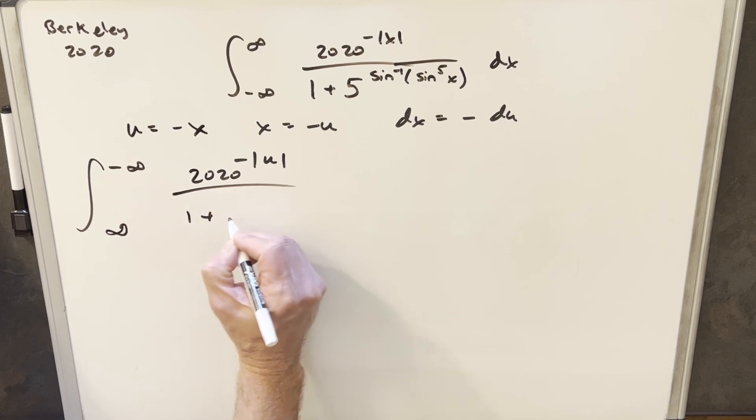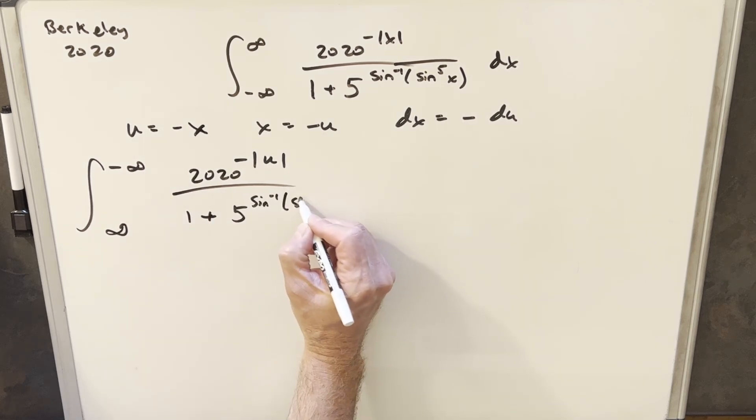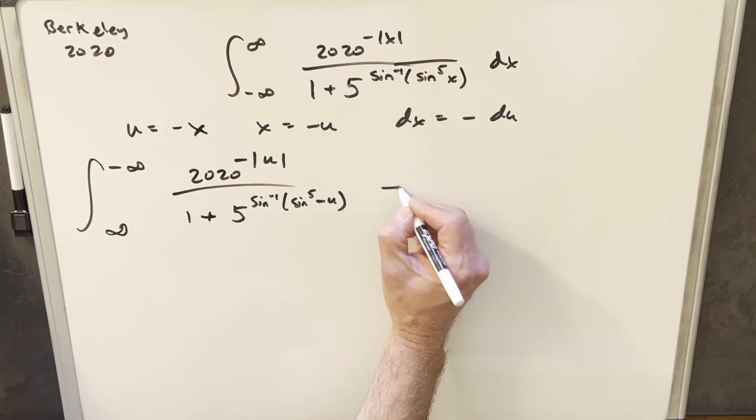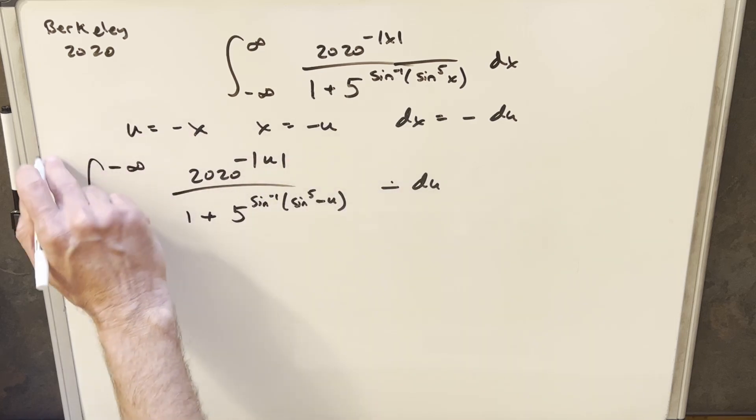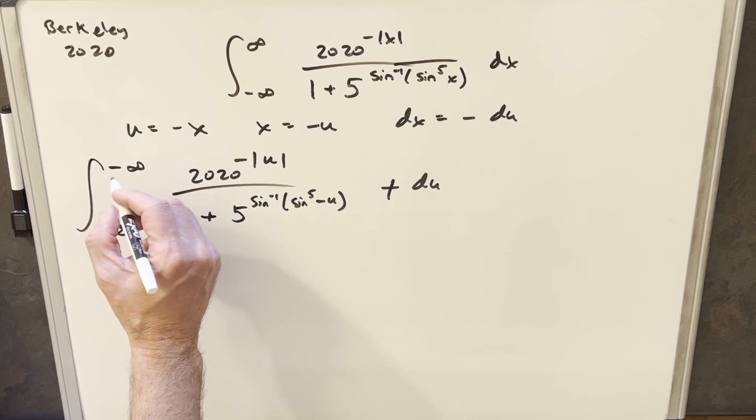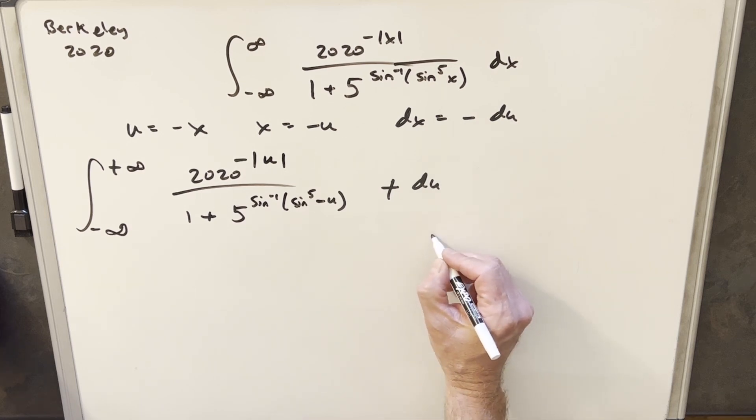Then we're going to have 1 plus 5 arc sine. Now we're going to have sine to the 5th, and we'll have a minus u. And we'll have our minus du here. What I'm going to do is take this minus sign, bring it out front of the integral, but then I'm going to use that to swap my bounds. So it's going to just make this one into plus and this one into minus, just flipping it.